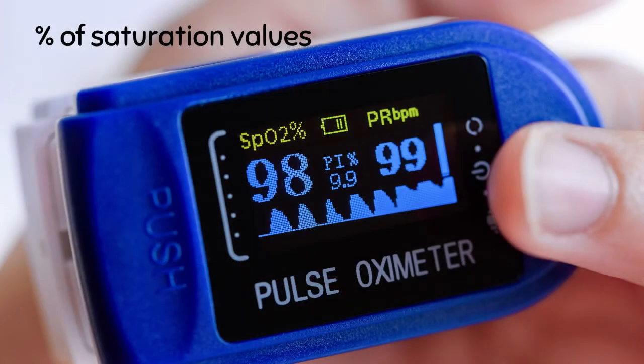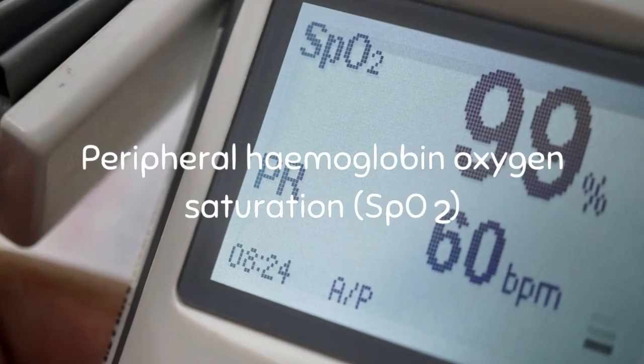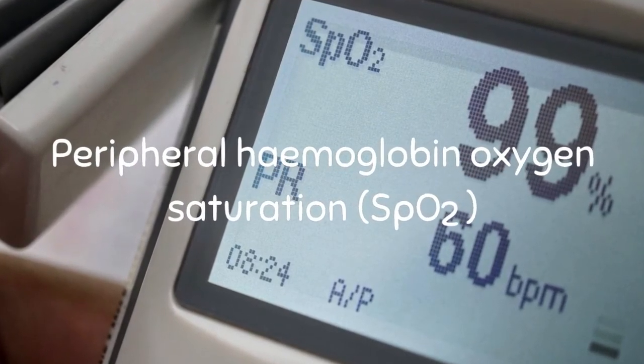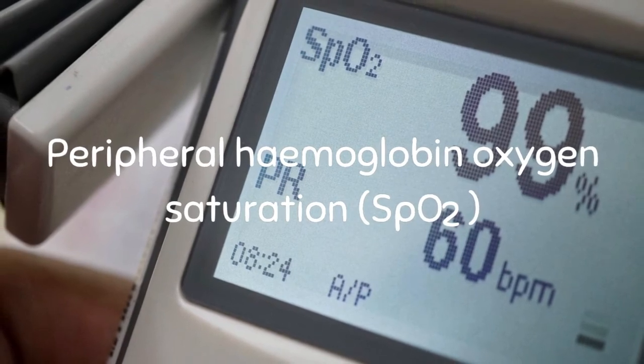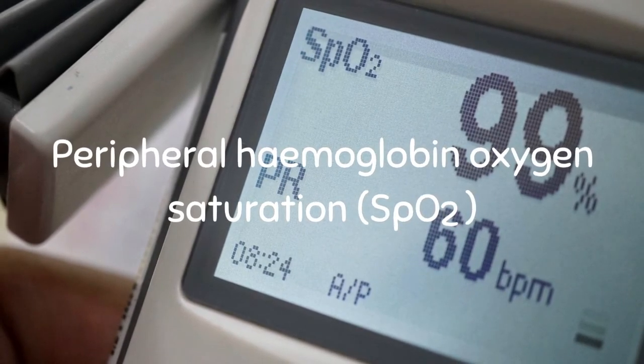The display tells us the percentage of saturation values. Oximeters report blood oxygen levels via an oxygen saturation measurement called peripheral hemoglobin oxygen saturation, or SpO2.